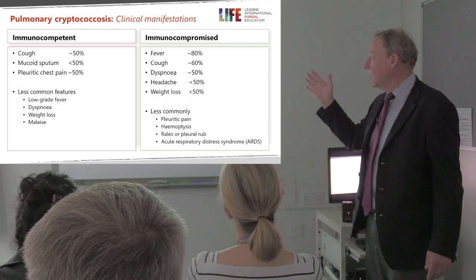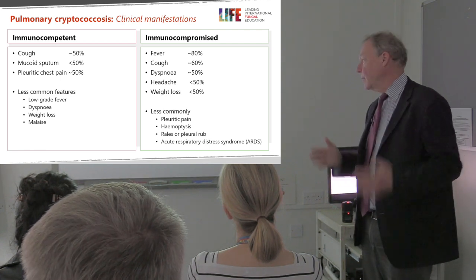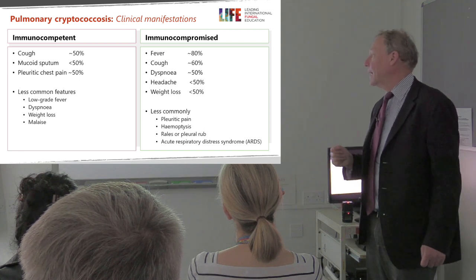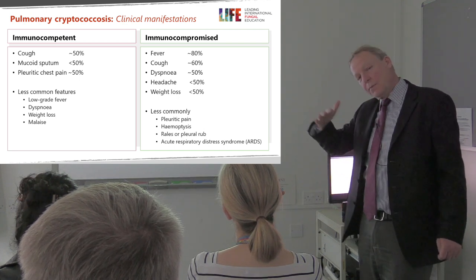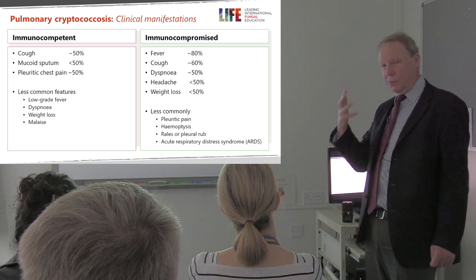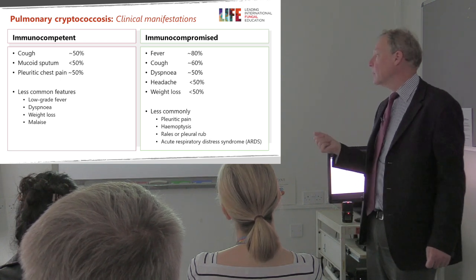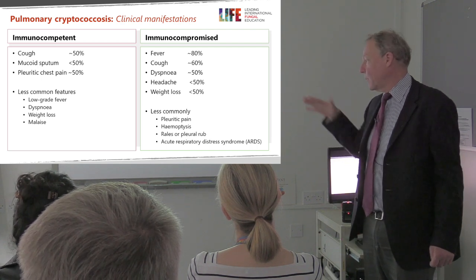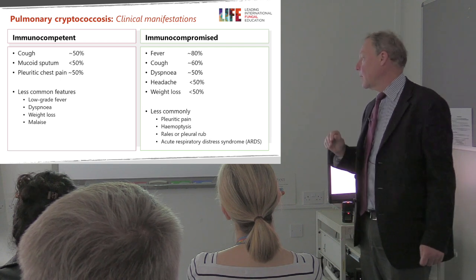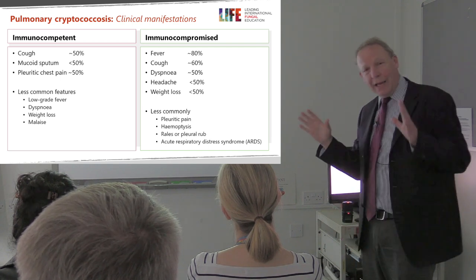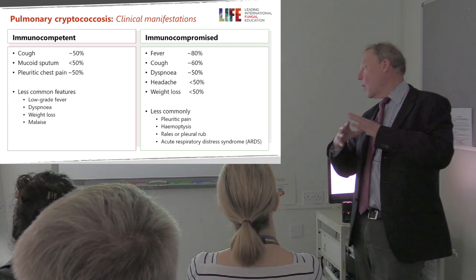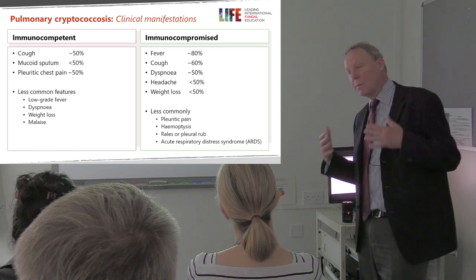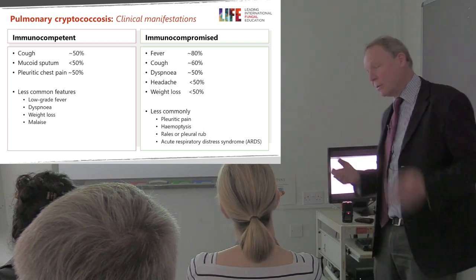In the immunocompromised patient it's part of a more serious illness — you have fever, quite a lot of cough, dyspnea, and headache, which is usually a manifestation of meningitis, also present in many of these patients. Some patients lose weight, and less commonly you get pleuritic chest pain, hemoptysis, crackles or rales in the lung, or a pleural rub. Occasionally it presents as an ARDS-type overwhelming respiratory failure syndrome, just as histoplasmosis and blastomycosis can present.